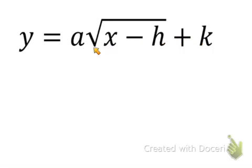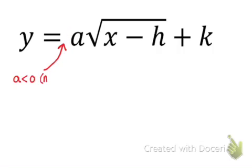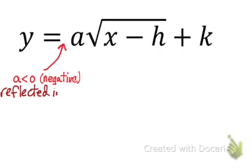How do these variables actually affect our parent function? Well, if we had a positive or negative sign on a, we would know that the graph would be reflected in the x-axis. So if a is less than 0, which means it's negative, then we have a reflection in the x-axis.